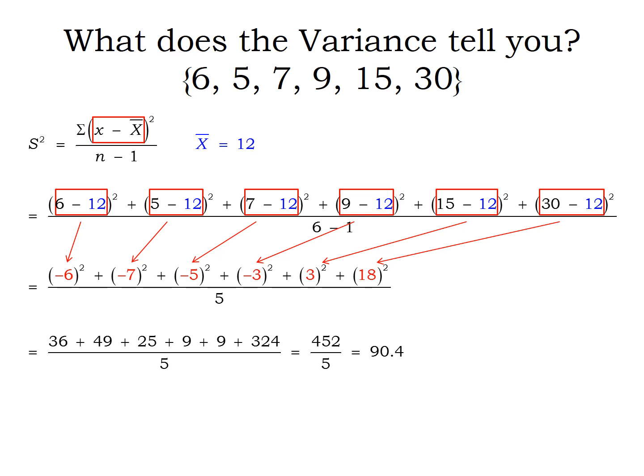So notice some of those numbers are negative, some are positive. The negatives are coming when your x values were below average. The positives are coming when your x values were above average. And if you notice, take the negative numbers, add them up, you get negative 21. You add the positive numbers up, you get 21. Because those total distances to the left and to the right had to be equal.